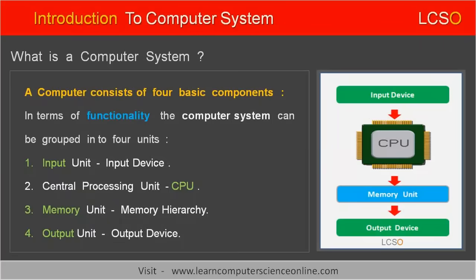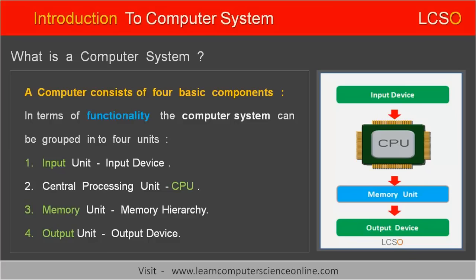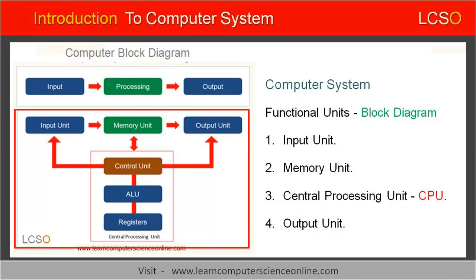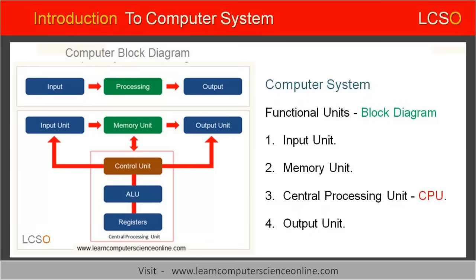Let us now understand the architecture of the computer system in terms of the functional units. The entire functioning of the computer can be grouped into various functional units. Let us understand some important functional units of the computer system with the help of a computer block diagram. The computer system working can be grouped into four major units, each performing a specific function.